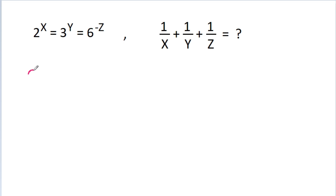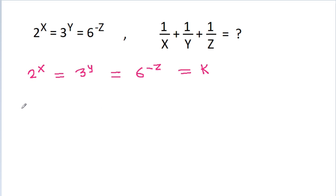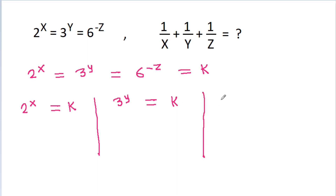We have 2 power x is equal to 3 power y is equal to 6 power minus z. Suppose it is equal to k, then we can get 2 power x is equal to k, 3 power y is equal to k, and 6 power minus z is equal to k.